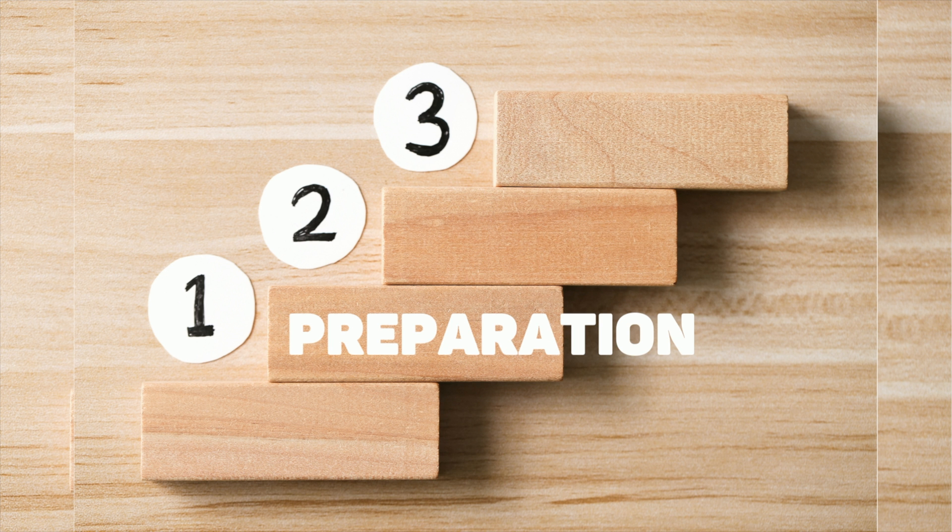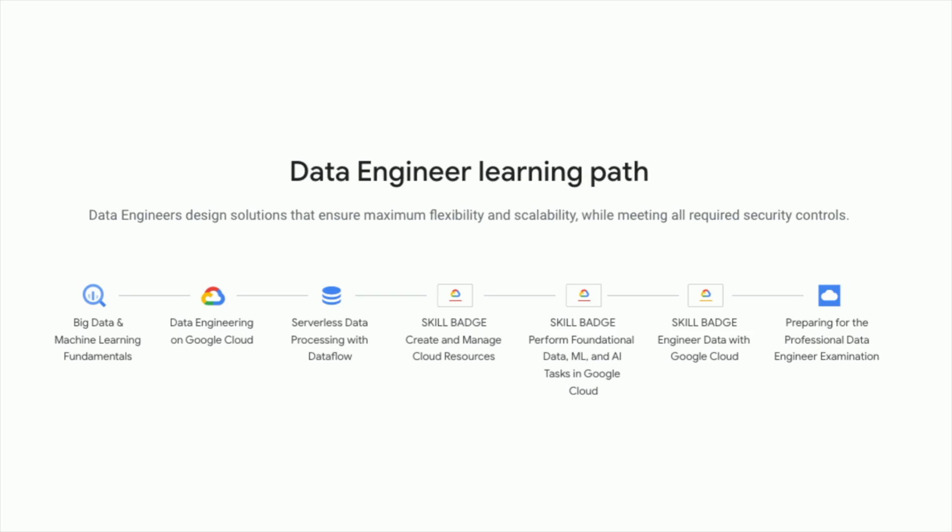Moving on to the main part — my three-step method to pass the exam. Step one is preparation. As part of my preparation I did two main courses. The first was the Data Engineering Learning Path from Qwiklabs, which is from Google itself. It consists of around four main courses and a few skill badges you need to attain. It's good to do this course if you're very new to Google Cloud. You can skim through it if you're already familiar with data engineering services.